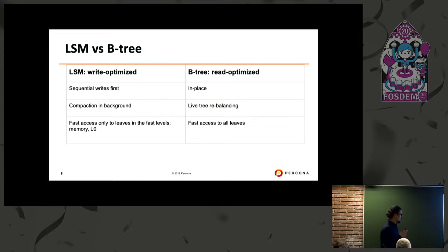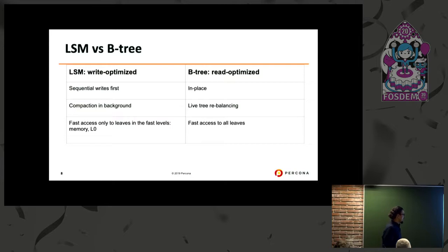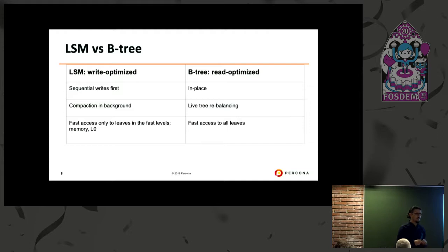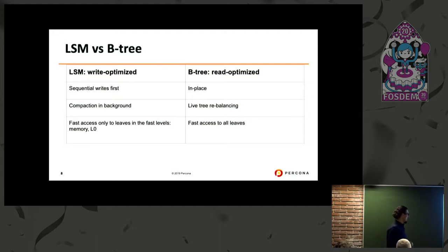The B-tree is mostly read-optimized, as we know — it uses a buffer pool, and writes are in-place. With the LSM-tree, the sorted string tables are written sequentially, and compaction happens in the background using configurable algorithms. You can choose your algorithm and then have fast access to data.